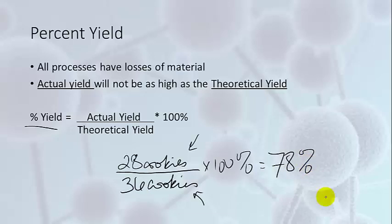So what are your losses here? How could you make this number increase? If you didn't have so many people eating the dough while you were trying to make your cookies, you could increase or have a higher percent yield.